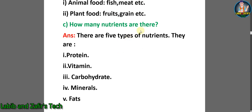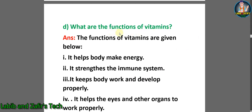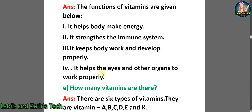C: How many nutrients are there? Answer: There are 5 types of nutrients — 1. Protein, 2. Vitamin, 3. Carbohydrate, 4. Minerals, 5. Fats. D: What are the functions of vitamins? Answer: The functions of vitamins are — 1. It helps the body make energy. 2. It strengthens the immune system. 3. It keeps the body working and developing properly. 4. It helps the eyes and other organs to work properly.